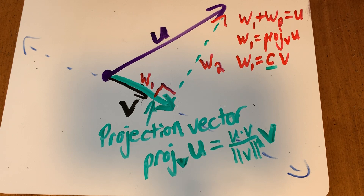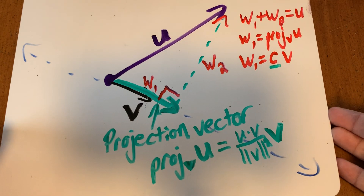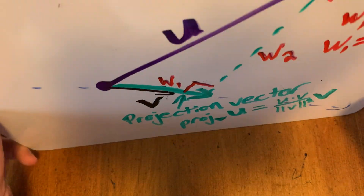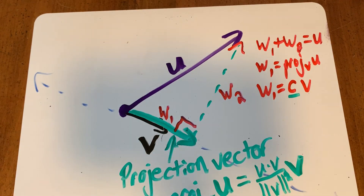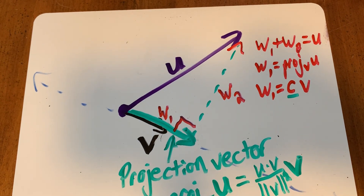So if you have gravity and an incline, you can project that gravity vector onto the incline to figure out how quickly or slowly something would slide along the incline, not accounting for friction. All right, that's it — have fun, enjoy!